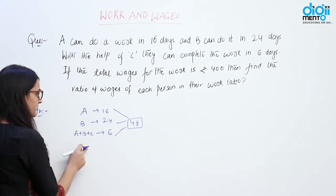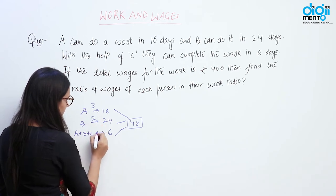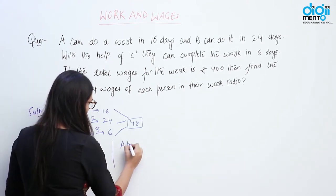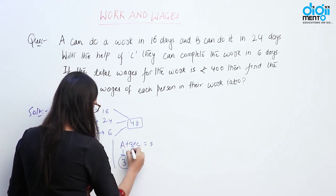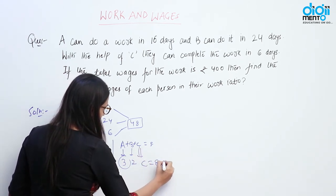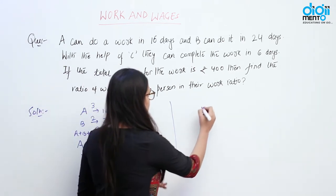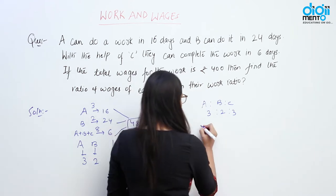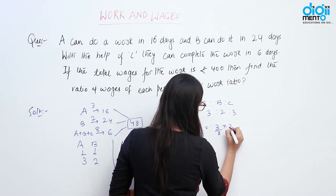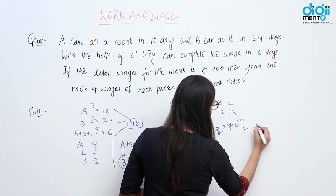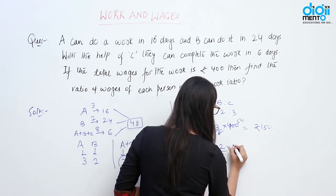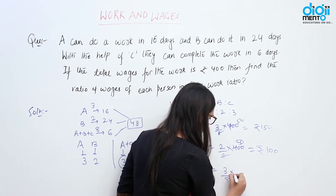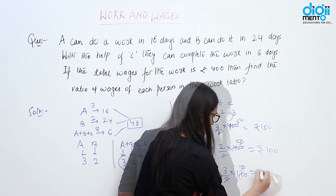We find one day work: A = 48/16 = 3 units, B = 48/24 = 2 units, and A+B+C together = 48/6 = 8 units. So C's individual efficiency = 8 − 3 − 2 = 3 units. The individual efficiency ratio of A:B:C = 3:2:3. Since wages ratio equals efficiency ratio, out of Rs. 400: A gets Rs. 150, B gets Rs. 100, and C gets Rs. 150.